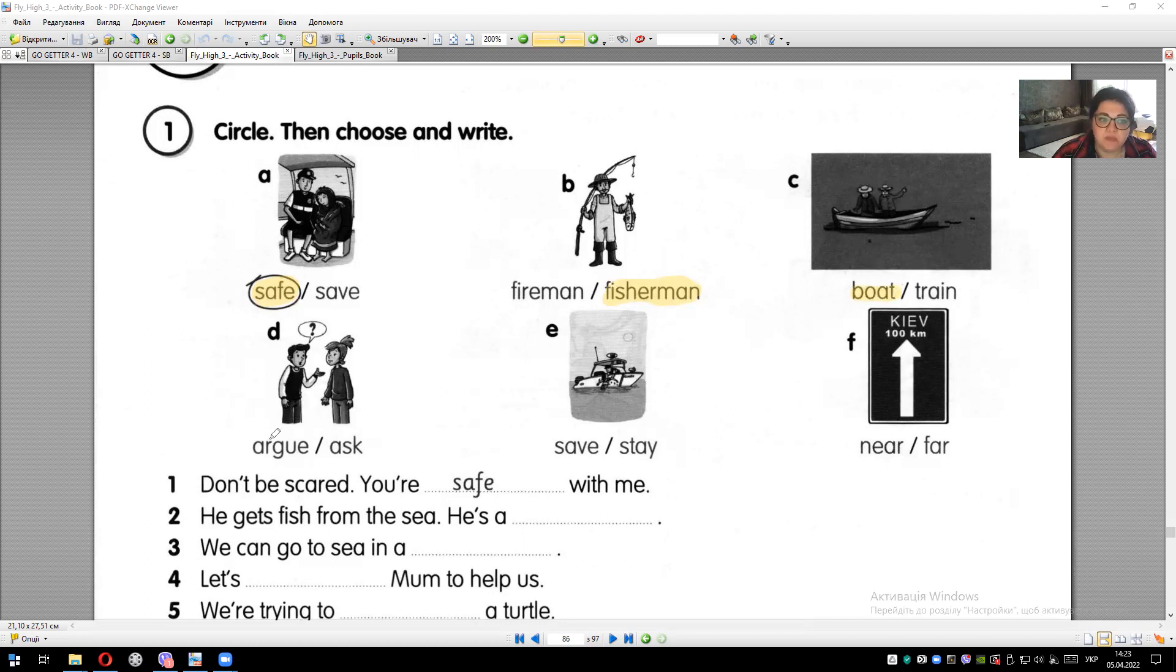Picture D. Argue, ask. Argue and ask. Let's recall. Argue - it means that you ask something and you are not at the same point of view. That means you're talking but you have a different opinion. So argue means to argue, disagree. Ask means to ask. What does this picture mean? Yes, ask.